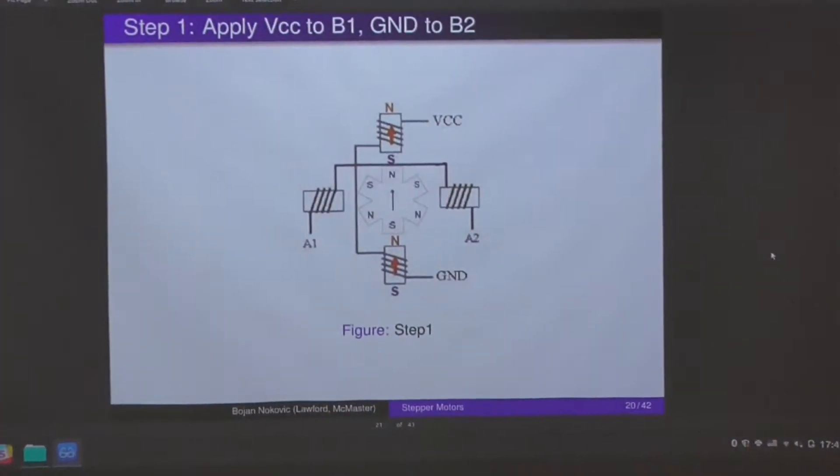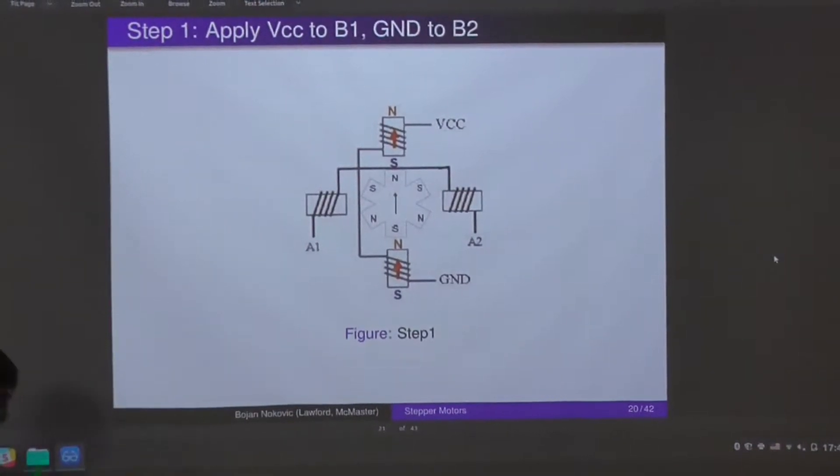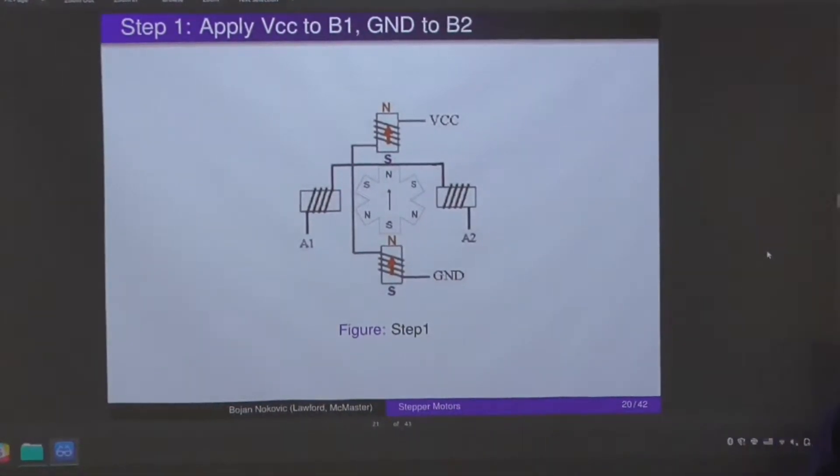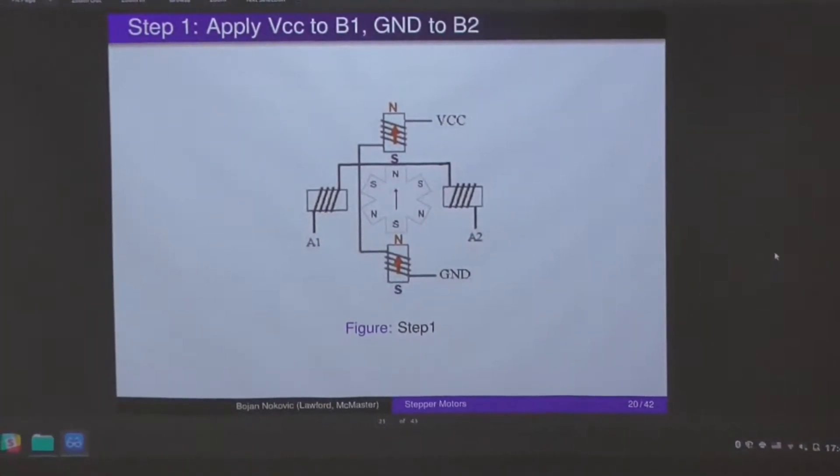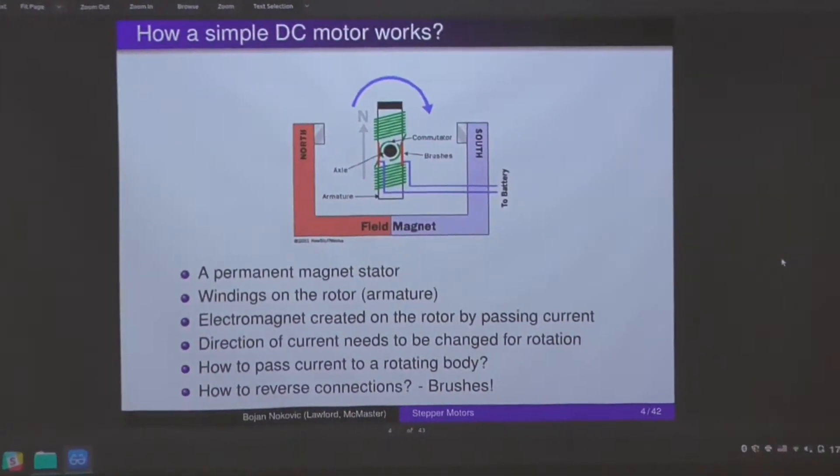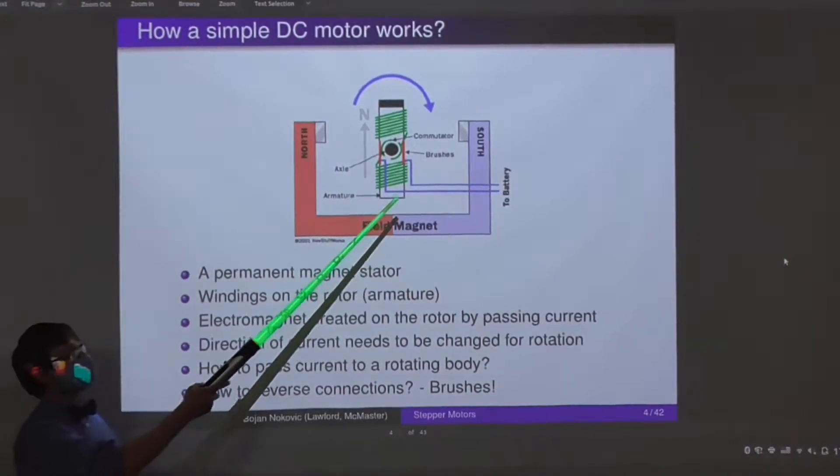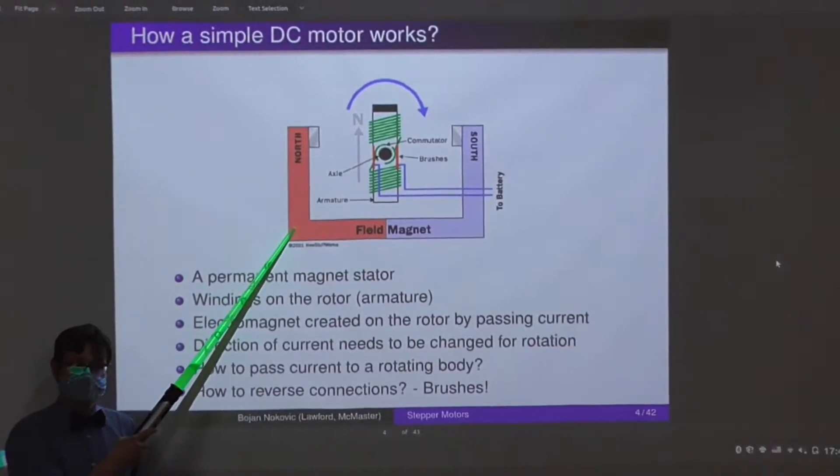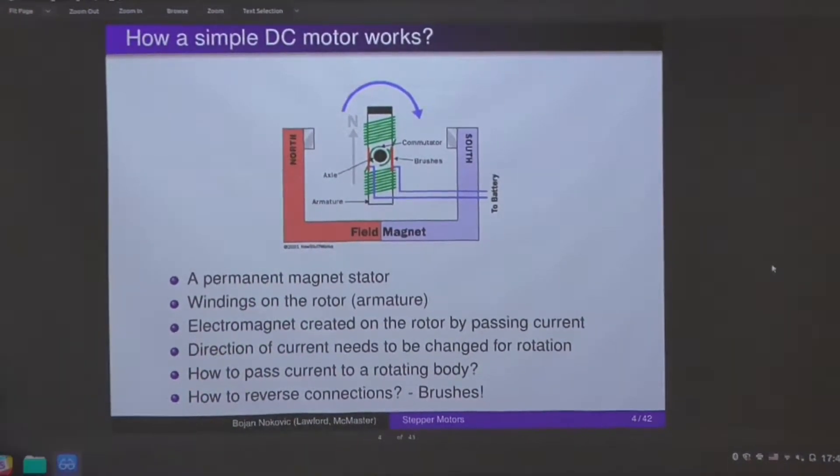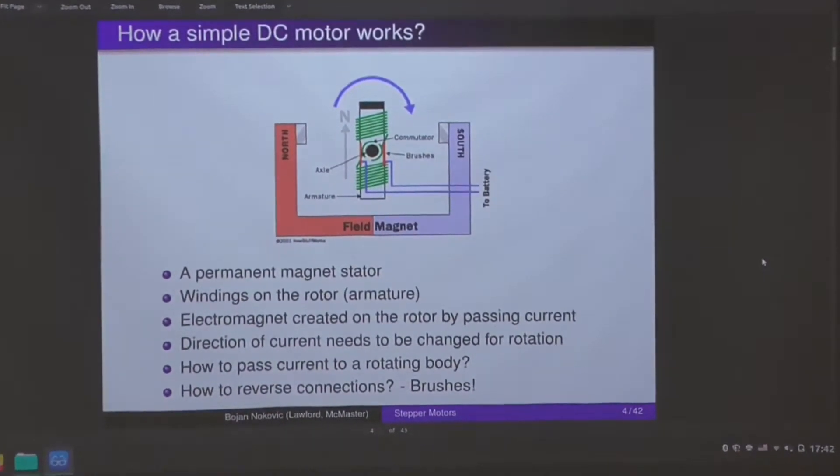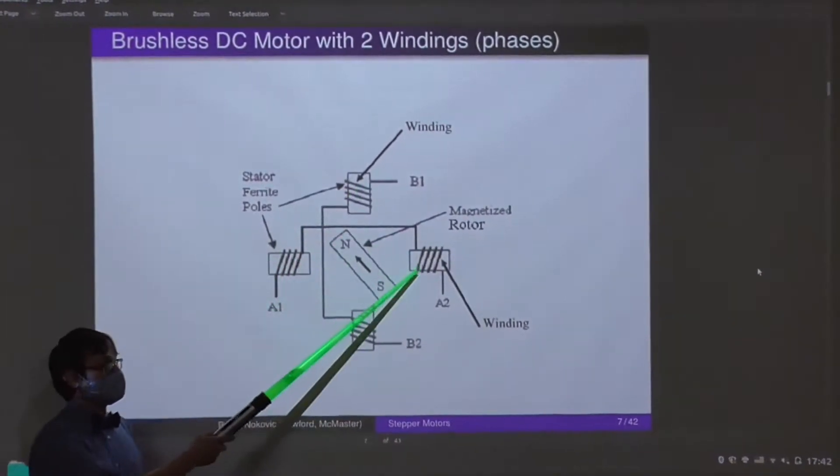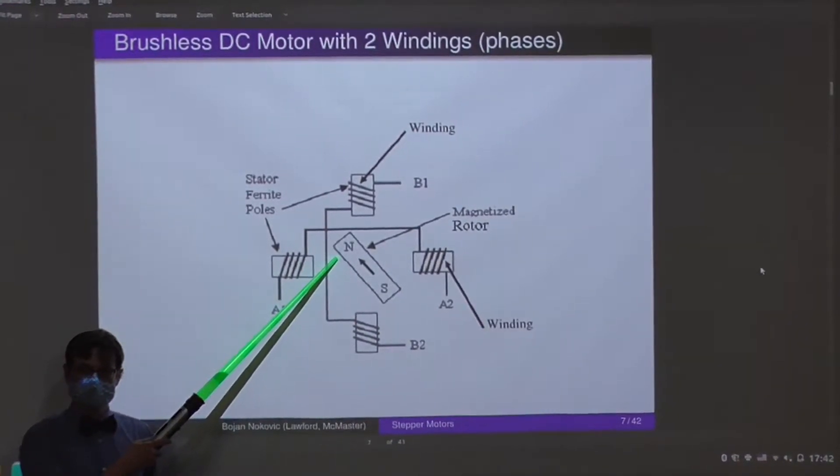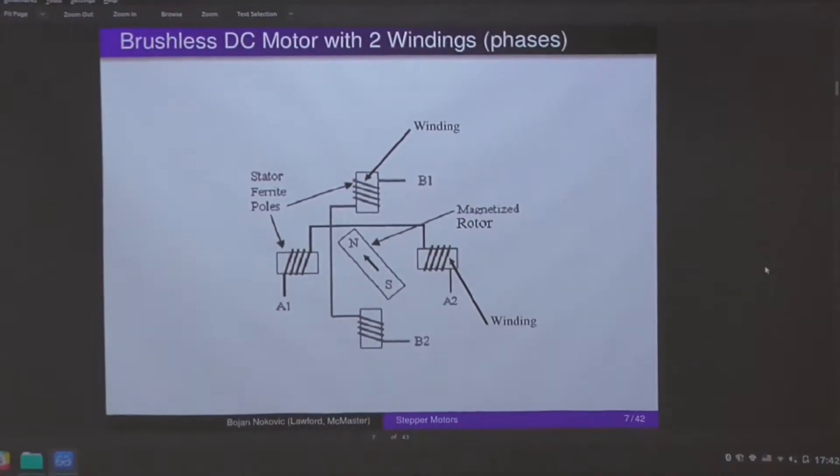So I talk about that kind of stuff because I care about you. We were talking about stepper motors. Very brief recap of where we were. Remember, DC motor: windings on the rotor in a magnetic field projected by the stator. Stepper motor is reversed - electromagnets in the stator, the rotor is a permanent magnet.